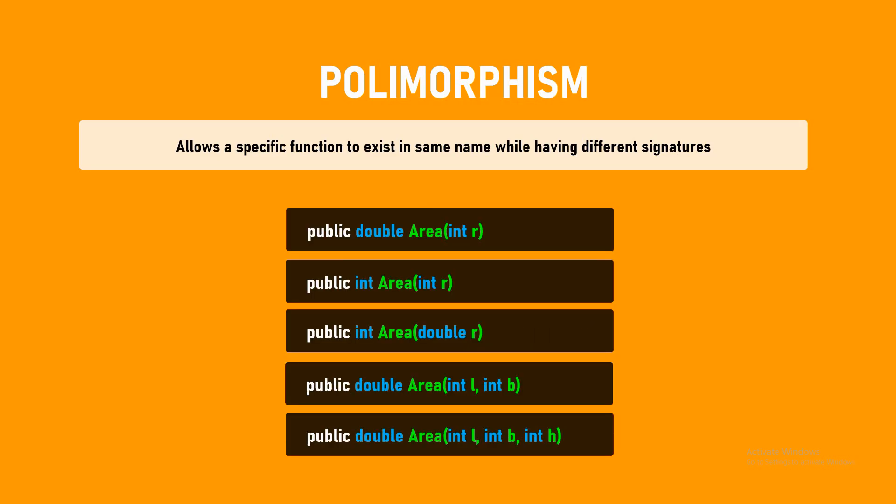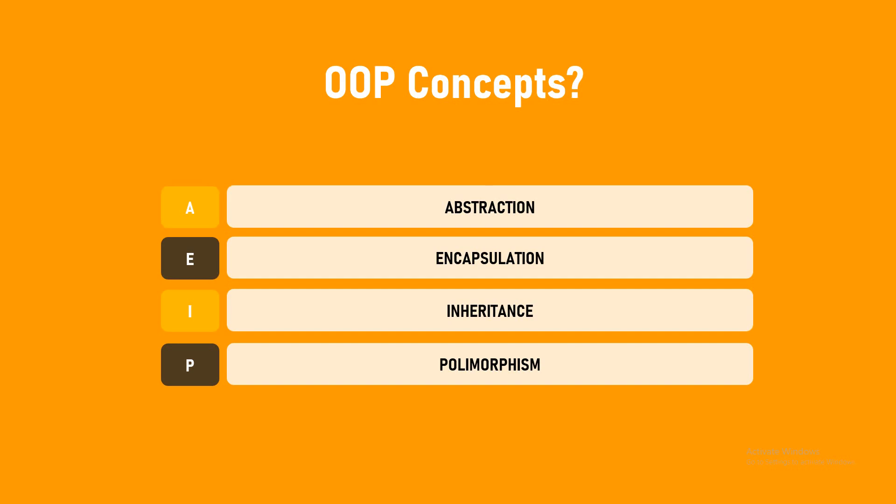In the first function, the return type is double and there is a single integer attribute. In the second one, the return type has changed to integer with the same attribute — so these two functions can co-exist. In the third function, the return type is the same as the second, integer, and the number of attributes is the same, but the type of attributes is different — int radius instead. So all these function names are area, but all their signatures are different. That's all about polymorphism — these are the four fundamental concepts of object oriented programming.